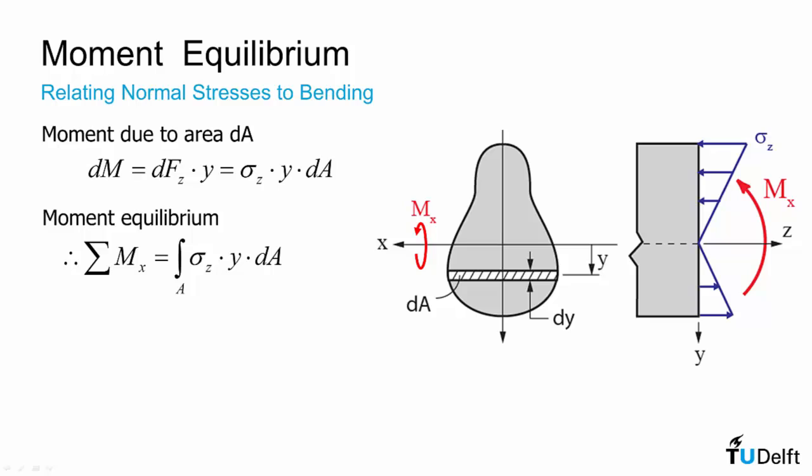Now if we sum all of these differential moments or infinitesimal moments, we have to integrate sigma z times y times da, and that has to be precisely equal to our internal moment m or mx as shown on the right.